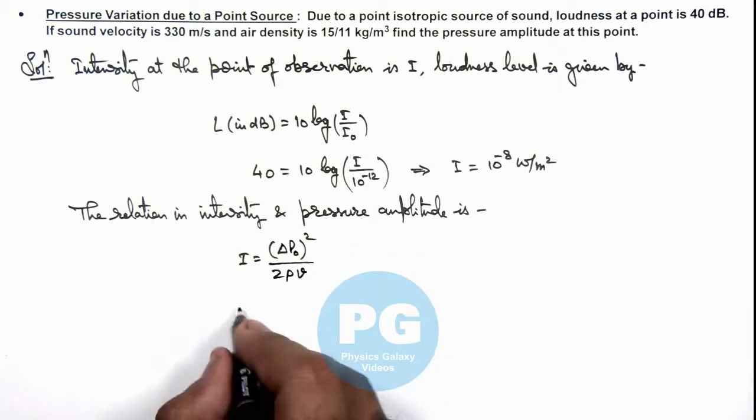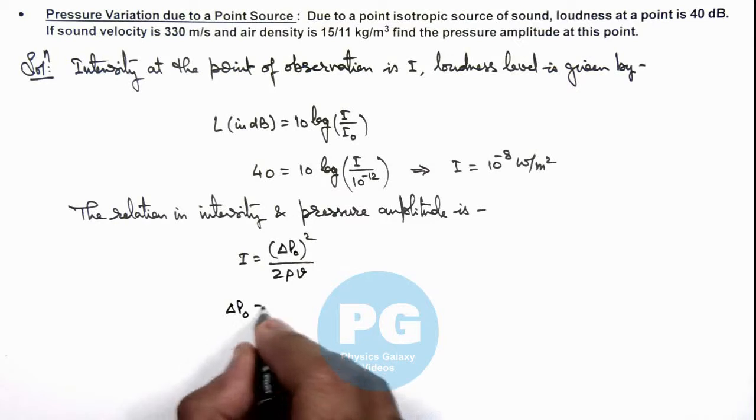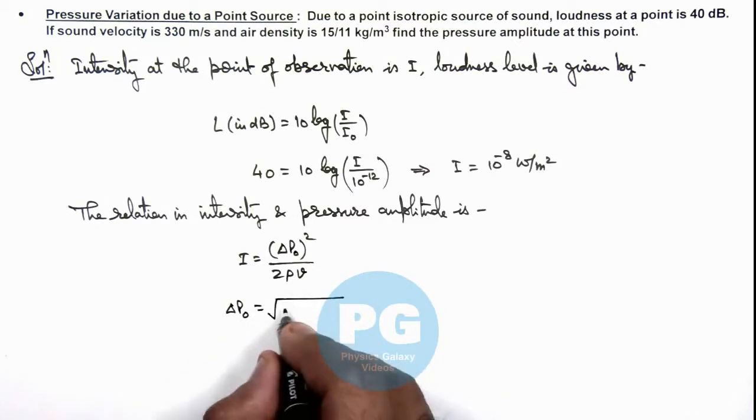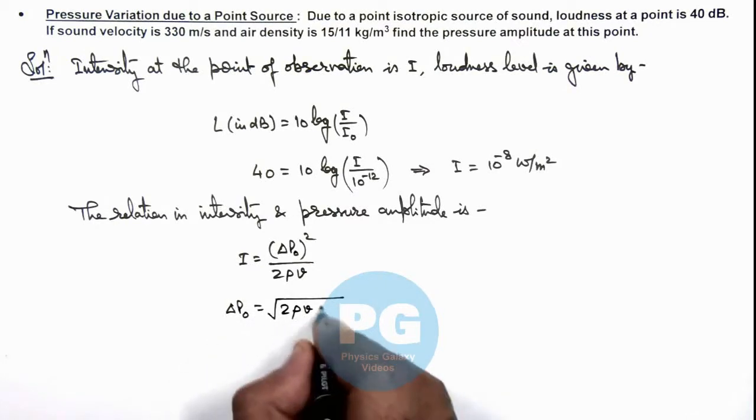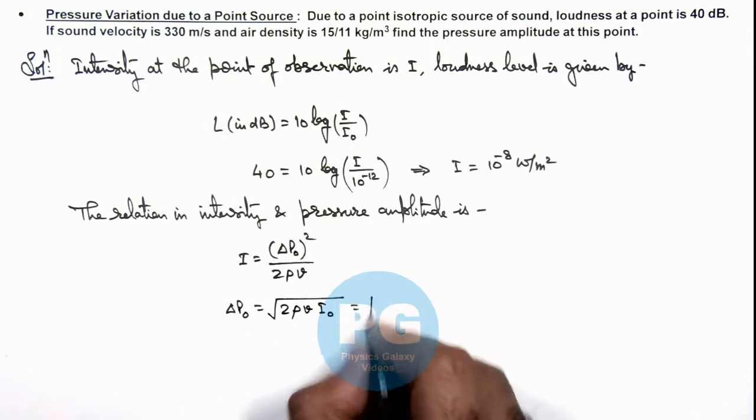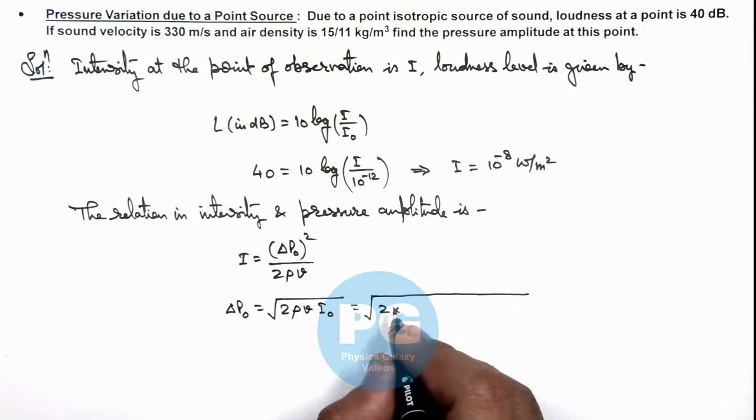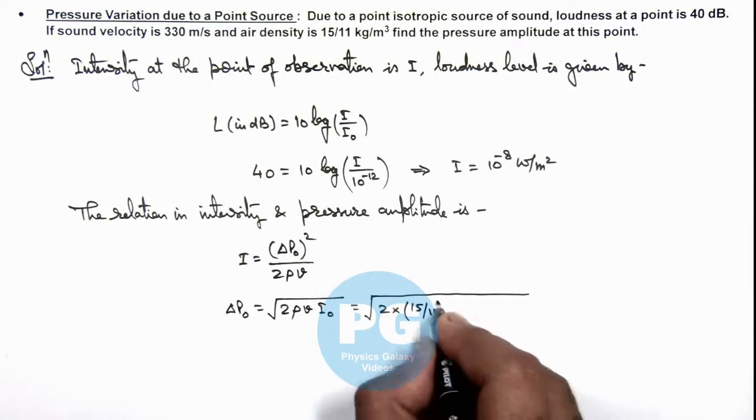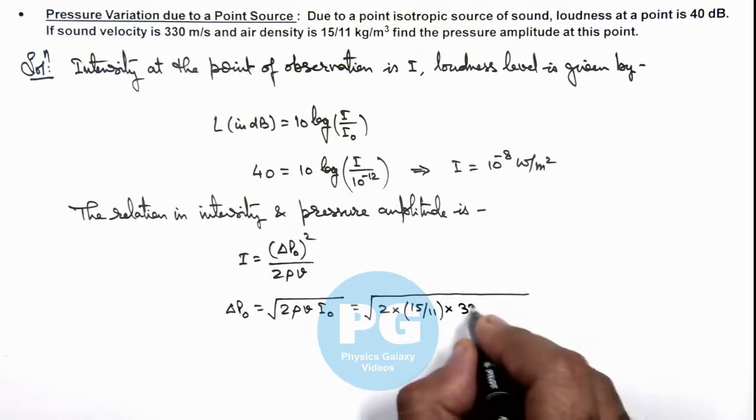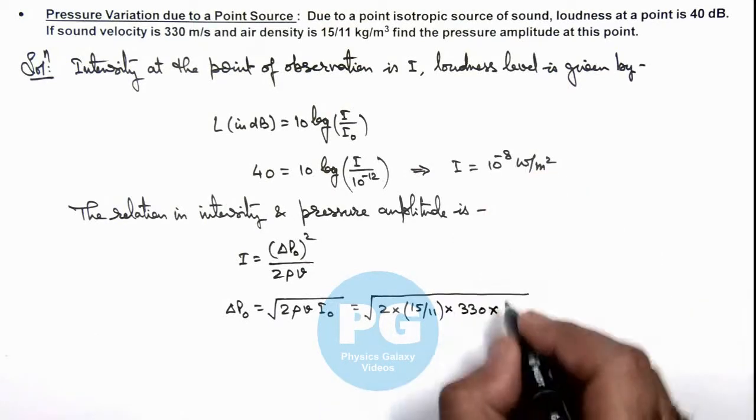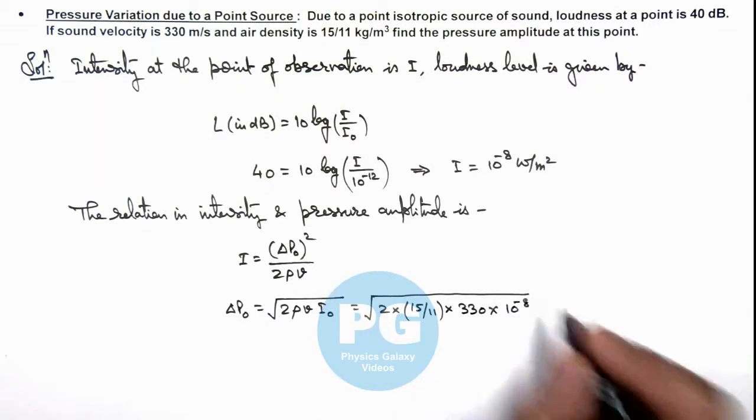If we calculate the value of delta P₀, this gives us root of 2ρvI. On substituting the values this gives us root of twice of the density of air, 15 by 11, multiplied by wave velocity 330 and intensity we calculated as 10 to power minus 8.